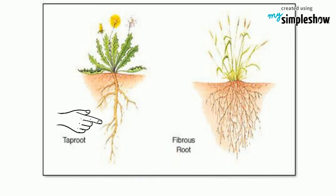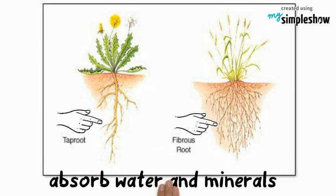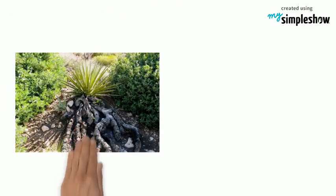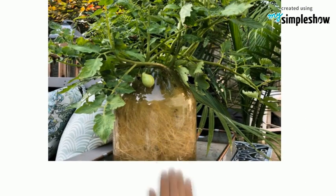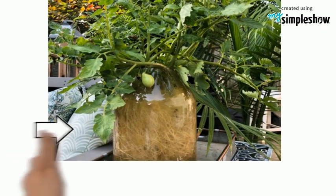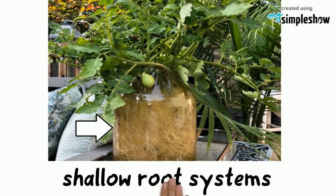Both taproot and fibrous roots have root hairs. These root hairs absorb water and minerals. Plants that grow in dry areas often have deep root systems, like yucca and cactus. Plants that grow in areas with abundant water are likely to have shallow root systems.